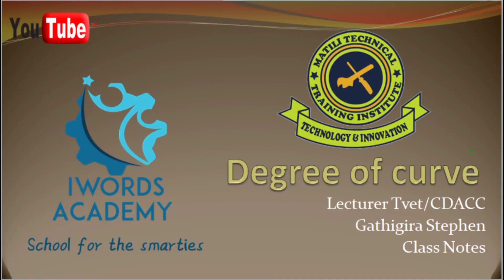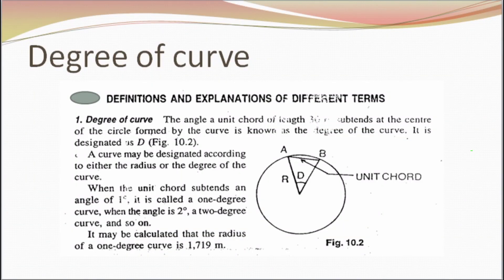So here we have the degree of curve. A lot of learners were asking about a certain formula and where it comes from, so I want to prove something here. The degree of curve — these are lectures by Gathagra Steven. The degree of curve is defined as the angle that a unit chord of length 30 meters subtends at the center of the circle formed by a curve, and it is designated as D.